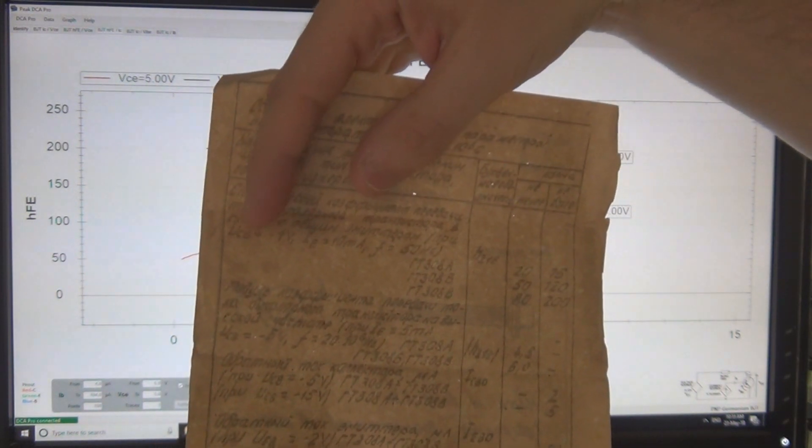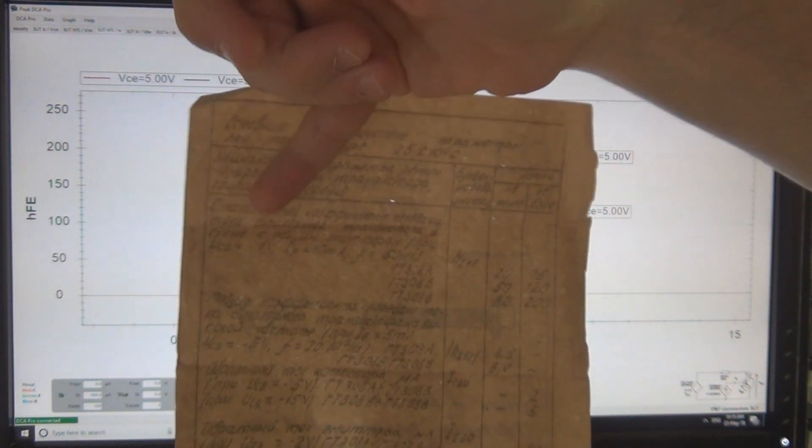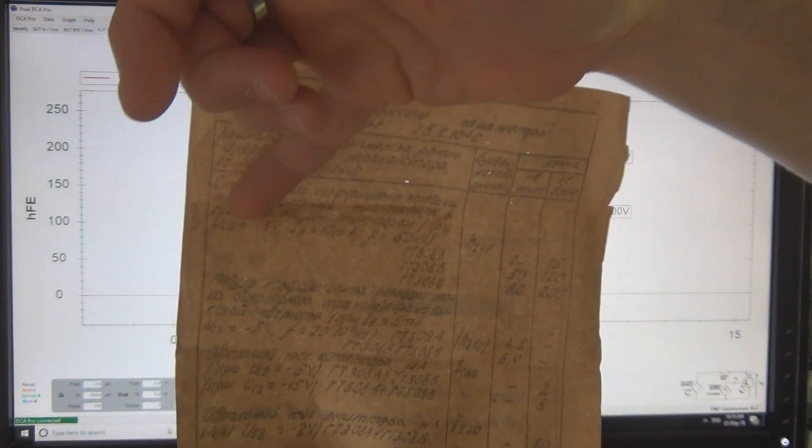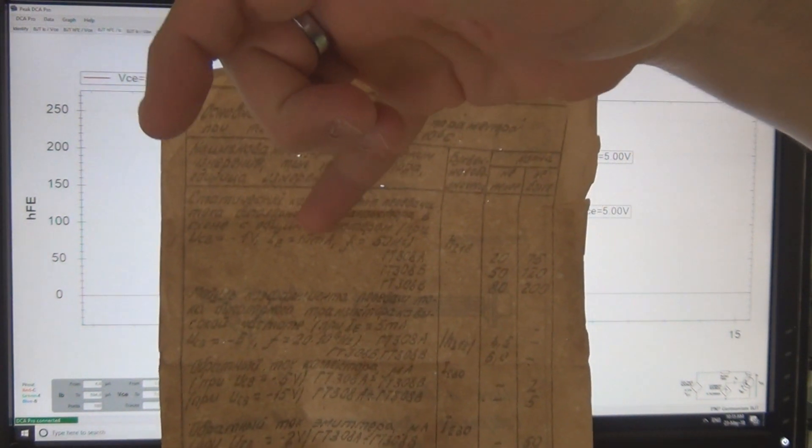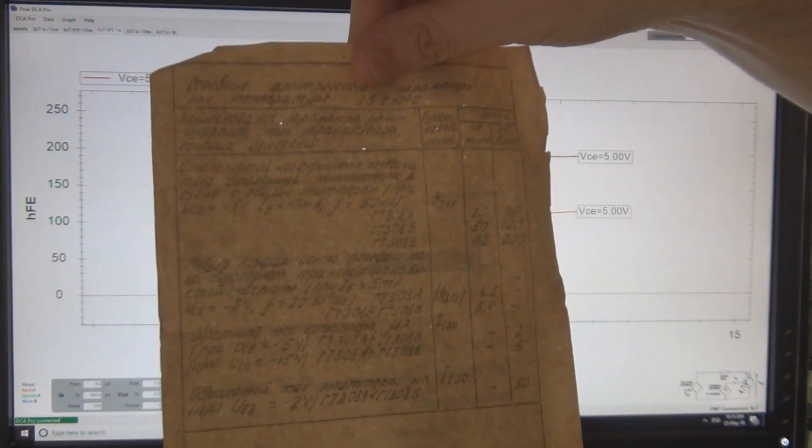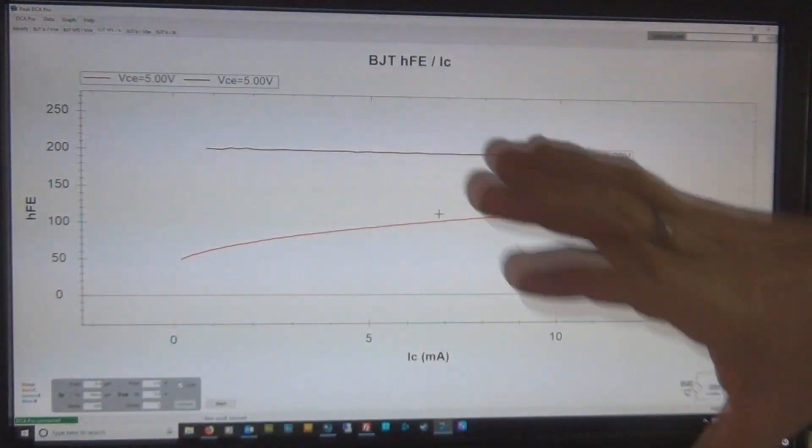But the actual test conditions are a bit hard for me to work out. You've got one volt collector to base, and emitter voltage of 10 milliamps, so I'm not quite sure how they're actually testing that. But, the point is the same.